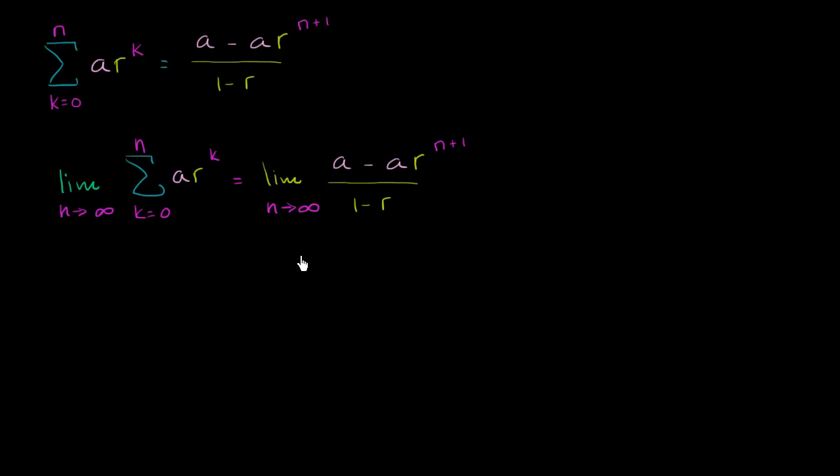So let's think about the case where the absolute value of r is greater than 0, and it is less than 1. What's going to happen in that case? Well, the denominator is going to make sense right over here. And then up here, what's going to happen?